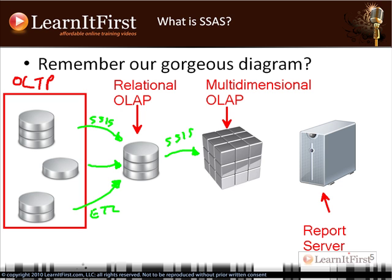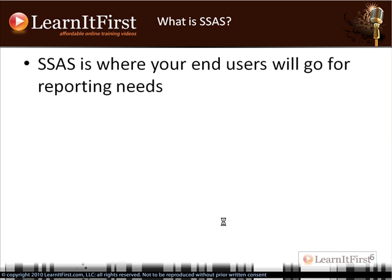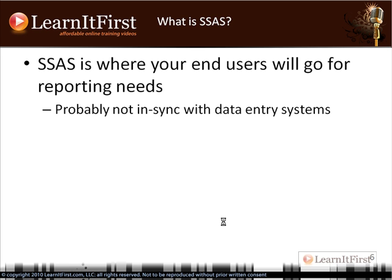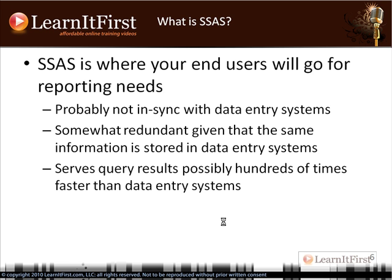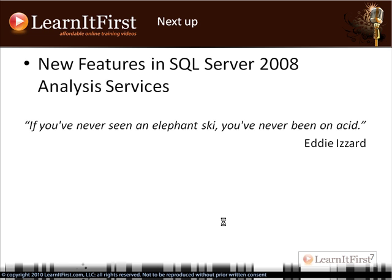So where does Analysis Services fit in the equation? It fits right here — that's where your users go for reporting. They could go back to the data entry systems, but that would be really slow. They could go to the relational data warehouse, but that would be even slower because there are a lot more rows. The multi-dimensional database has pre-calculated aggregates, so it's much, much faster. Because it stores pre-calculated aggregates, query results are near instant — where they might have taken 20 minutes or two hours had you gone to one of the other places. And that's what it is — I told you it would be quick.